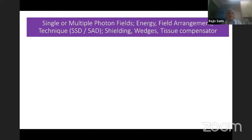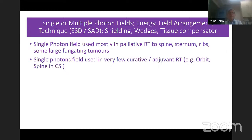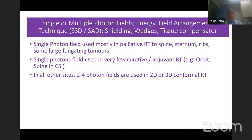Regarding single versus multiple photon fields: a single field is only used in palliative treatment — spine, sternum, ribs, and some large fungating tumors. Very few curative or adjuvant RT cases use a single field. If not using an advanced technique for craniospinal radiation, all other sites use at least two fields, sometimes up to four or even five fields. For simple 2D and 3D conformal, we rarely exceed four fields.